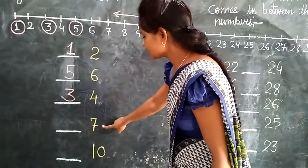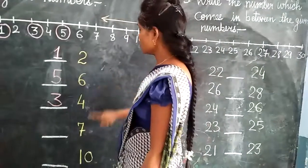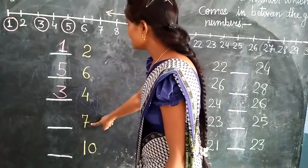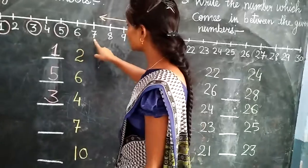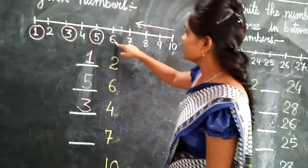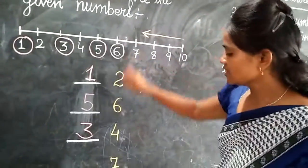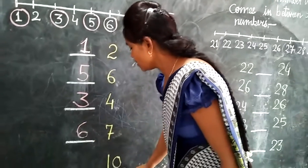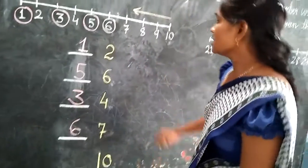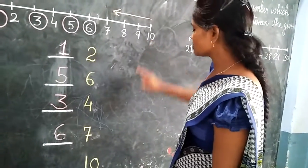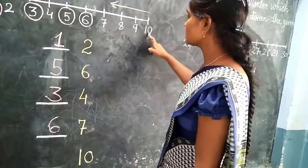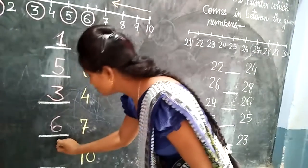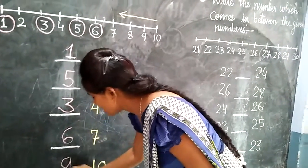Next number is 7. Now what comes before 7? Yes — it comes 6. We will write here: 6. Now next number is 10. What comes before 10? 9. Very good. We will write here: 9.